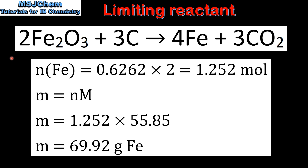In the final step we will determine the maximum mass of iron that can be produced. To do this we look at the ratio between the limiting reactant, which is iron oxide, and the product in question, which is iron. By looking at the balanced equation we can see the ratio of iron oxide to iron is 2 to 4. So to calculate the amount in moles of iron that can be produced, we multiply the amount in moles of iron oxide by 2, which gives us 1.252 moles of iron.